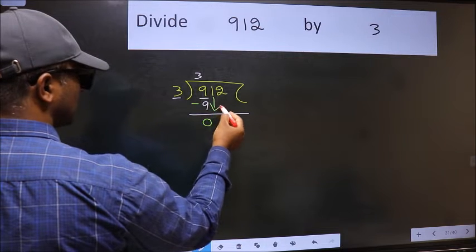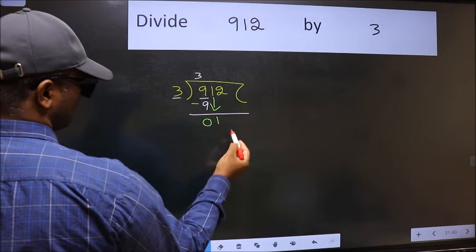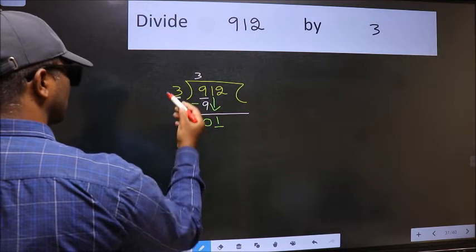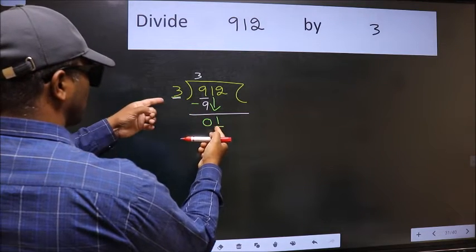After this, bring down the next number. So 1 down. Now here we have 1 and here 3. 1 is smaller than 3.